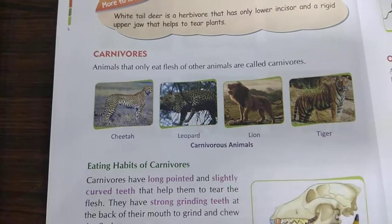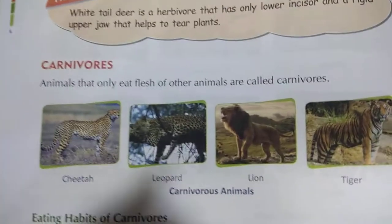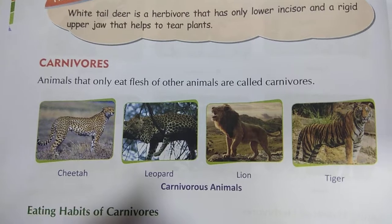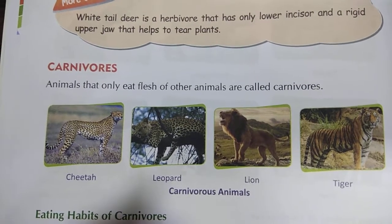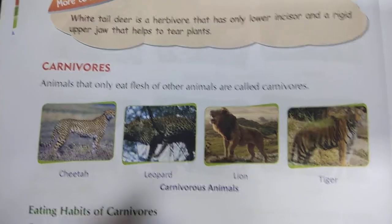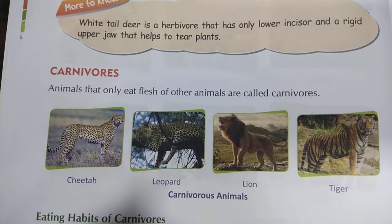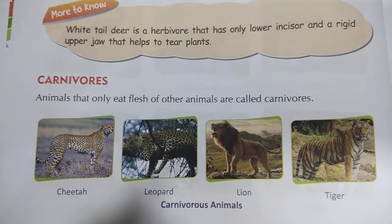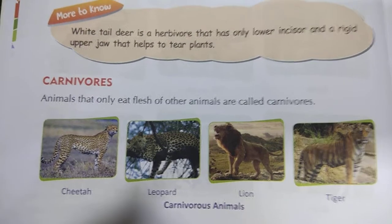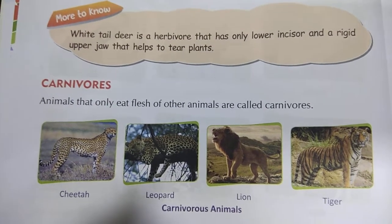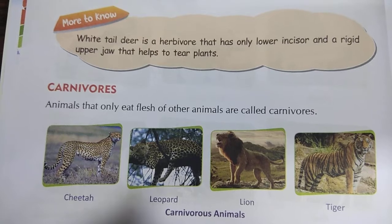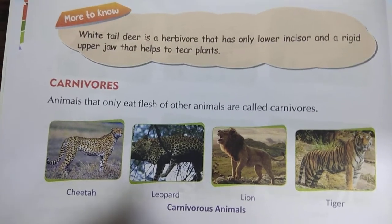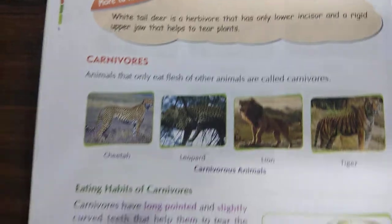The second group is carnivores. Animals that eat only the flesh of other animals are called carnivores. They don't eat plants. Some examples from pictures: cheetah, leopard, lion, tiger — these are carnivore animals. Did you see a lion eating plants? No — they eat only flesh of other animals. They are called carnivores.